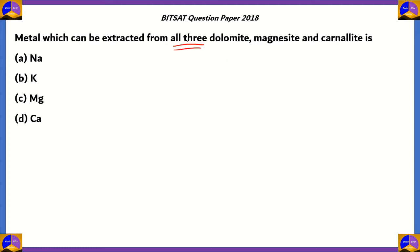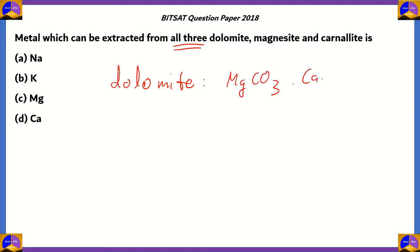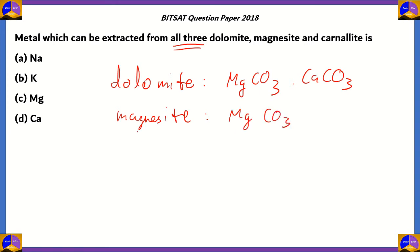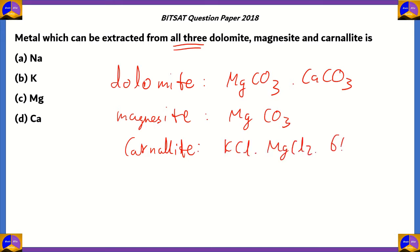To know which metal can be extracted from all three ores, we need the chemical formula of each. Dolomite consists of magnesium carbonate (MgCO₃) and calcium carbonate (CaCO₃). Magnesite is made completely of magnesium carbonate (MgCO₃). Carnalite is made of potassium chloride (KCl) and magnesium chloride (MgCl₂) as well as six water molecules.